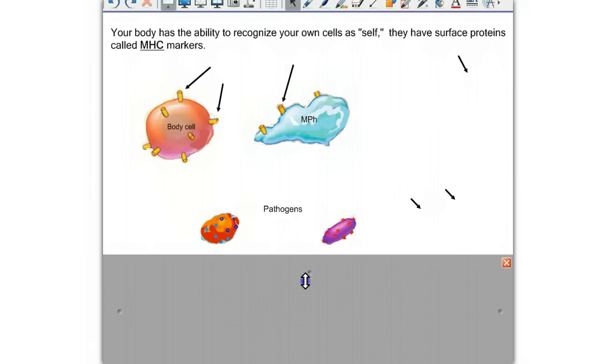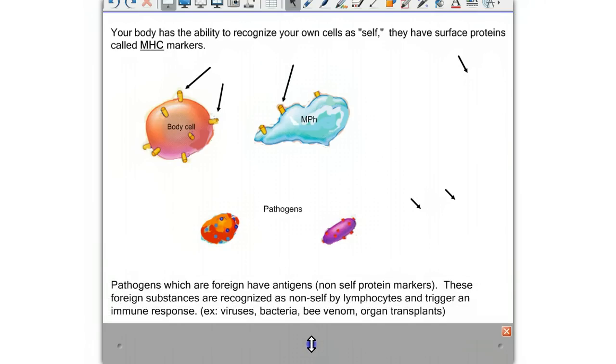Pathogens, which are foreign particles, have non-self markers called antigens. These antigens are the opposing team uniform. They're found on bacteria, viruses, bee venom, cancer cells, or transplanted organs. The presence of these antigens will be recognized by certain white blood cells and trigger the specific immune responses.